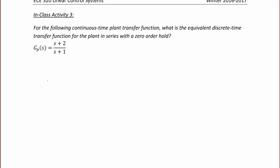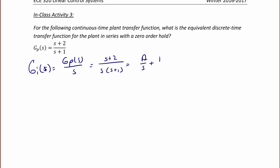So, first thing we're going to do, I'll find g_i(s) first this time. g_i(s) equals g_p(s) over s, which equals (s + 2) over s(s + 1), which equals a over s plus b over (s + 1), where a equals 2 and b equals negative 1. We found those by using the cover-up method.